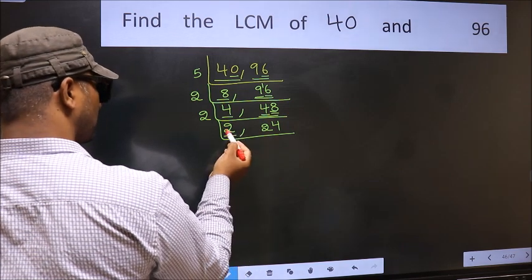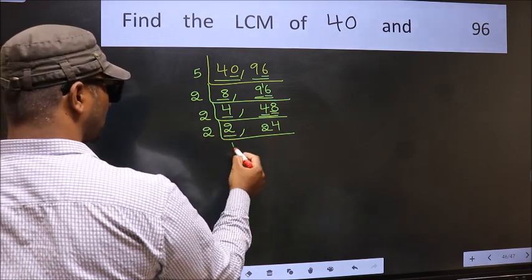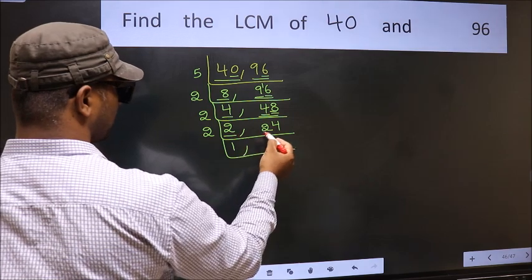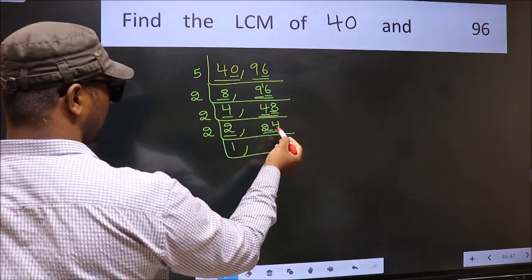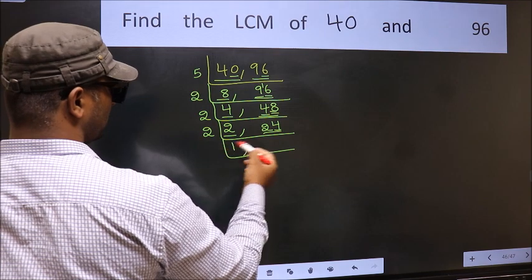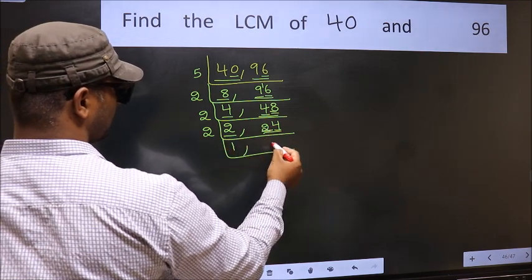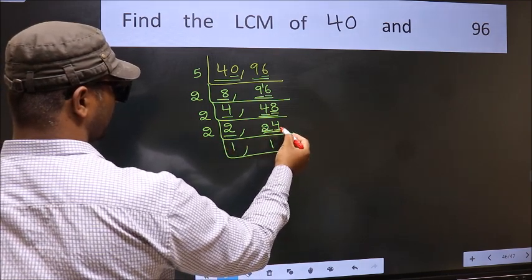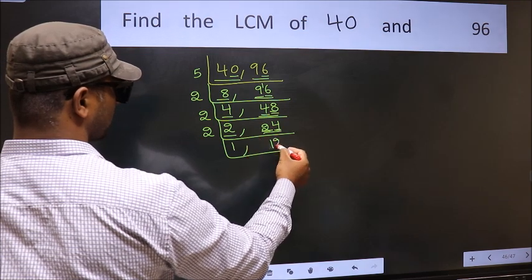Now here we have 2. 2 is a prime number, so 2 times 1 is 2. The other number is 24. Last digit 4 is even, so this is divisible by 2. When do we get 2 in the 2 table? 2 times 1 is 2. The other number is 4. When do we get 4 in the 2 table? 2 times 2 is 4.